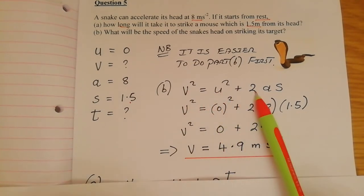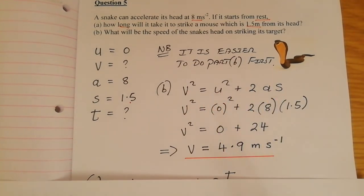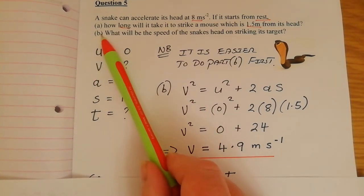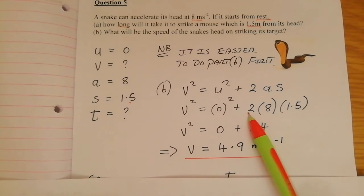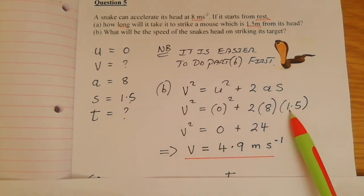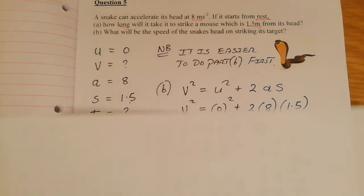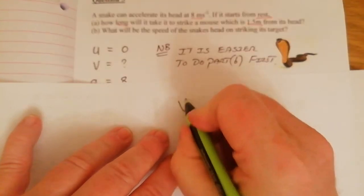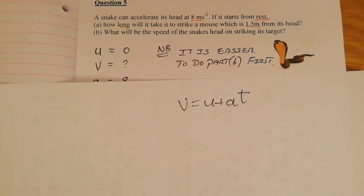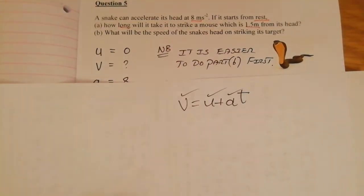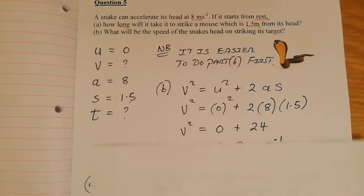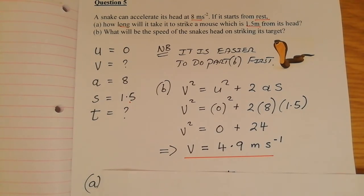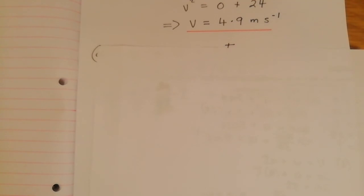I'll do the second part first — finding the final speed. I use v² = u² + 2as because I have u, a, and s but not t. Substituting in: v² = 0² + (2 × 8 × 1.5) = 24, so v = √24 = 4.9 metres per second. That's the speed of the snake's head when it strikes the mouse. The reason I couldn't use v = u + at is that I didn't have the time.